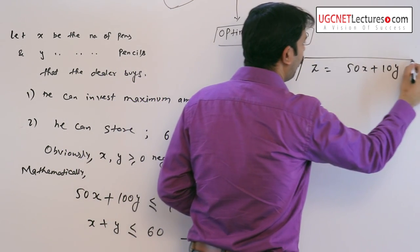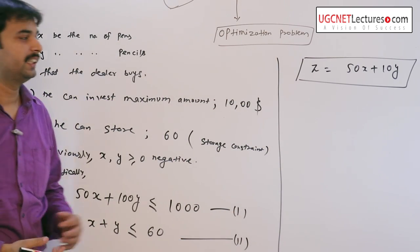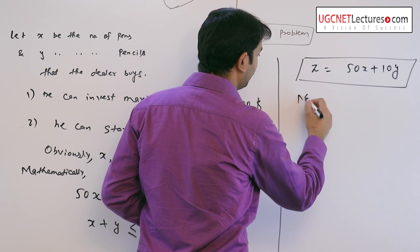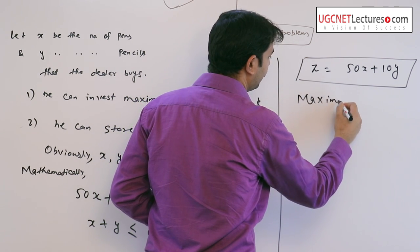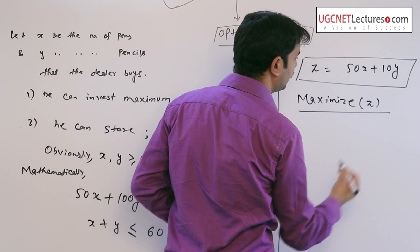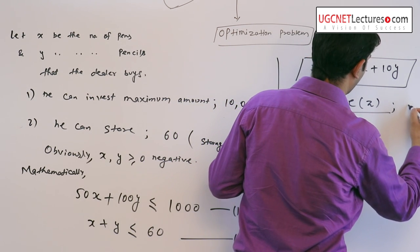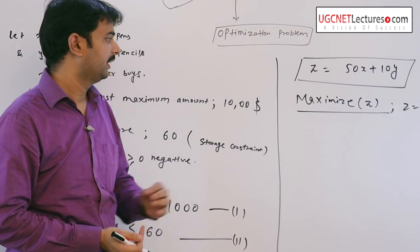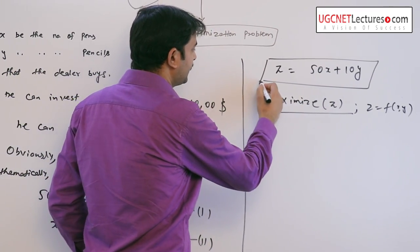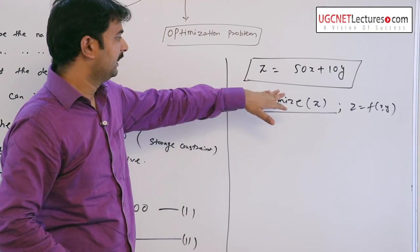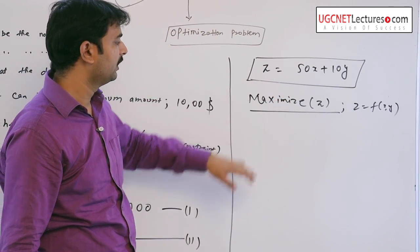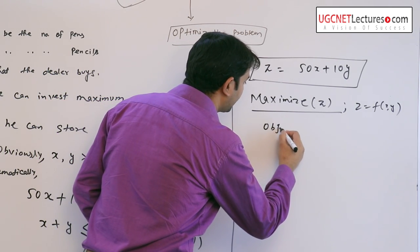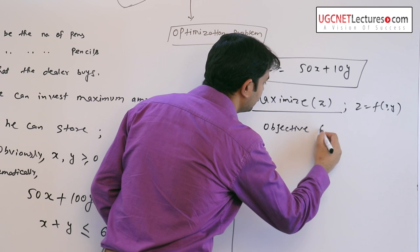His goal is to maximize his profit, that is a function of x and y. We can say his goal is maximization of z. We can also say it is an objective function as it is a function of x and y.